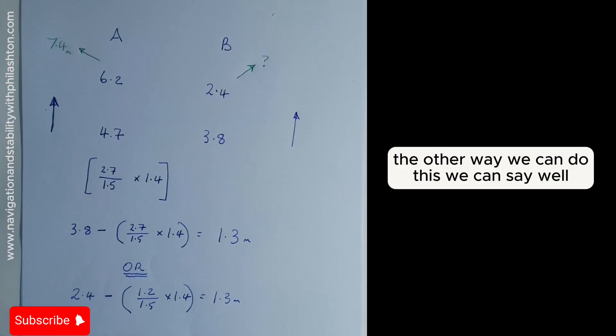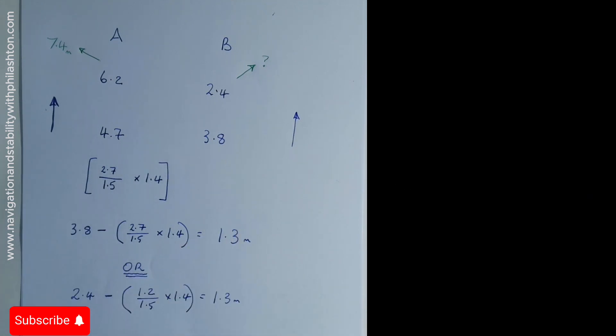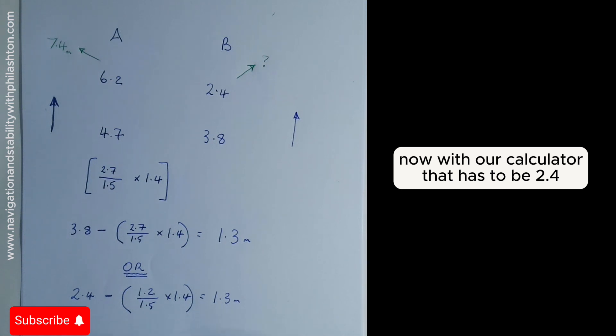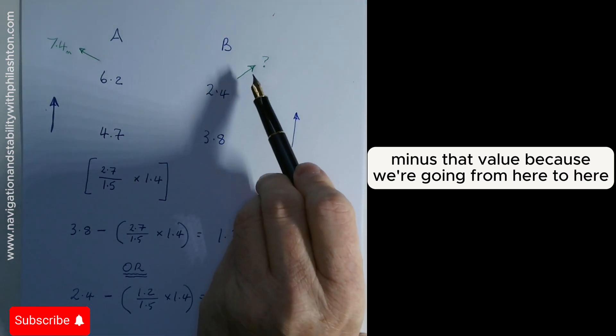The other way we can do this: we can say 6.2 to 7.4 is 1.2 over 1.5, multiplied by the same, the 1.4, the difference between these two. Now with our calculator, that has to be 2.4 minus that value because we're going from here to here.